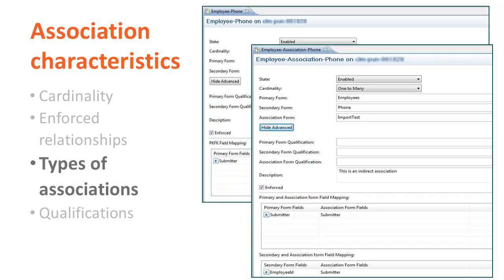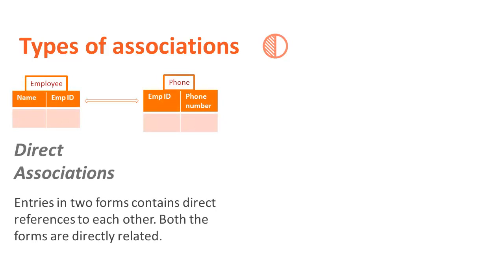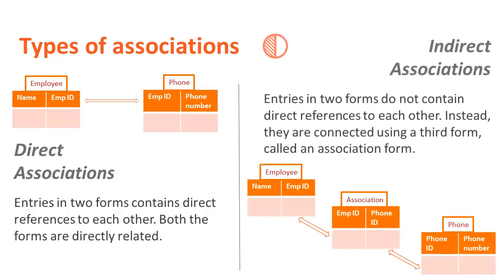As explained earlier, there are two types of associations which you can define in BMC Remedy Developer Studio: direct and indirect. This example shows the concept of primary key and foreign key. Direct associations involve only two forms — employee ID is the primary key in the employee form and is the foreign key in the phone form. For each phone number, you must have a valid employee ID. Note that direct associations can have only one-to-one or one-to-many cardinality. Conversely, indirect associations are called external associations because they need a third form called an association form to create the relationship. In the example, the employee and phone form are related using an association form. Note that indirect associations can have all three cardinality options.